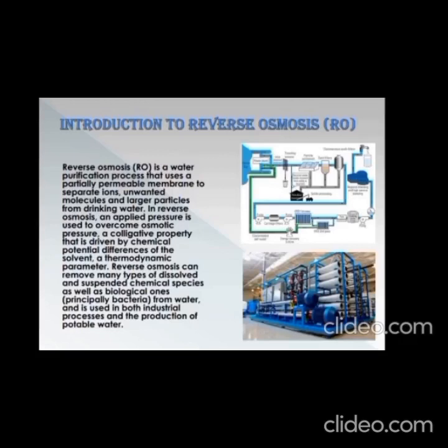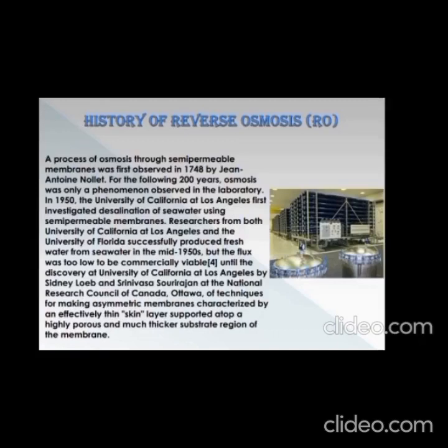Reverse osmosis is a water purification process that uses a partially permeable membrane to separate ions, unwanted molecules, and larger particles from drinking water. In reverse osmosis, an applied pressure is used to overcome osmotic pressure, a qualitative property driven by chemical potential differences of the solvent — a thermodynamic parameter. Reverse osmosis can remove many types of dissolved and suspended chemical species, as well as biological ones, from water, and is used in both industrial processes and the production of potable water.